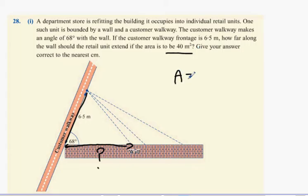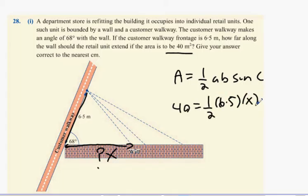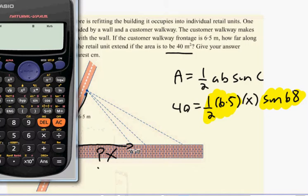But what we are certain of is that the area has to be 40. So, A equals a half AB sine C. Your 40 has to equal, we'll call this X. So, a half 6.5 times X sine 68.